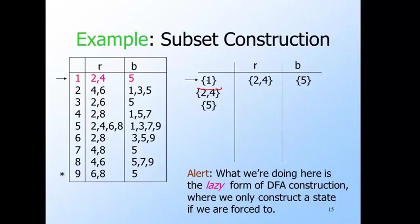We're only going to create rows for states when we are sure we need them. Obviously we need the start state of the DFA, which is the set containing one. From the NFA table, we know that on R, state one goes to two and four, and on B it goes to five. Since this set is a singleton, that's all we need to know. So in the DFA, the set containing one goes to the set {two, four} on R, and the set containing five on B. I've made rows for these two new sets, though I haven't filled them out yet.